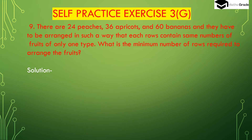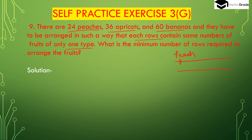Question number 9: There are 24 peaches, 36 apricots and 60 bananas and they have to be arranged in such a way that each row contains the same number of fruits of only one type. What is the minimum number of rows required to arrange the fruits?